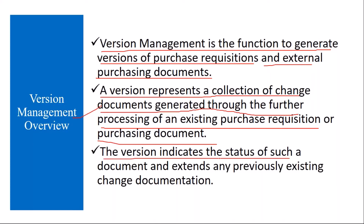A version indicates the status of a document and extends any previously existing change documents. When you create a document initially, the version will be zero. After that, if you make any changes, the version becomes one. If you make further changes, the version becomes two, and so on. In those versions, you can see all the changes that happened.